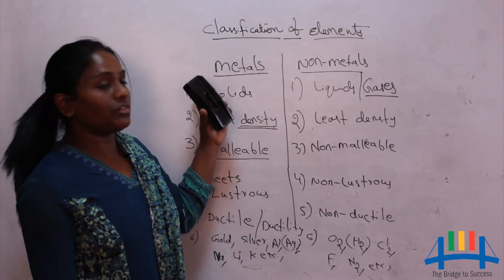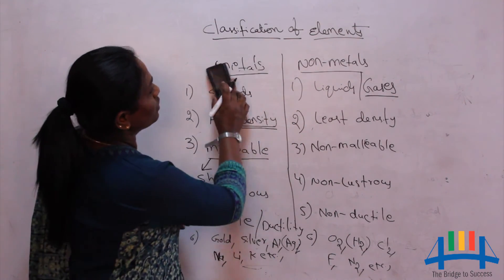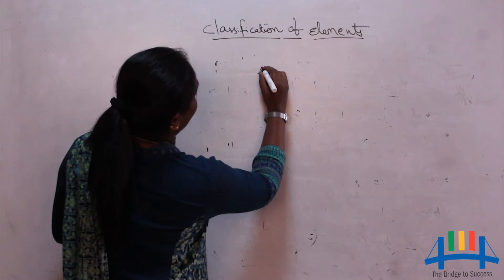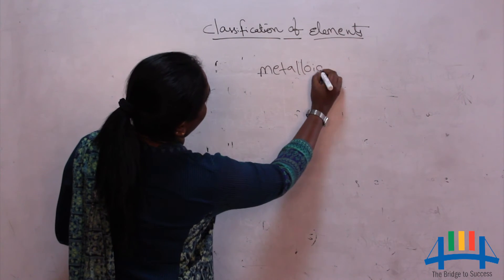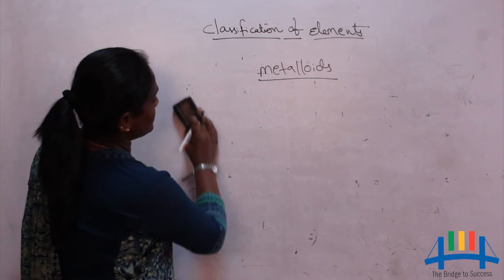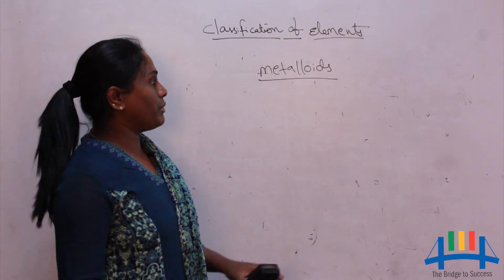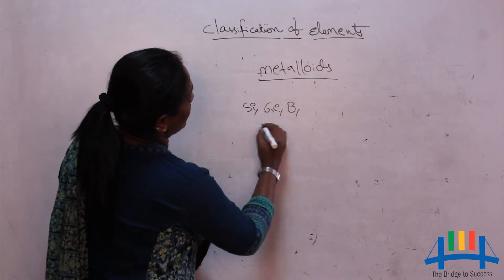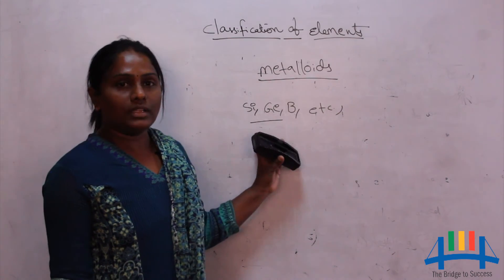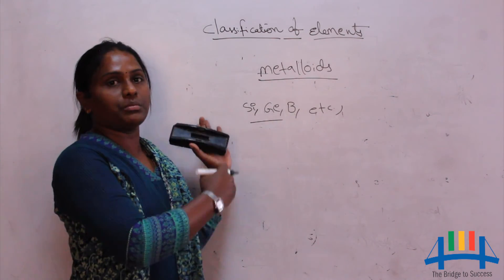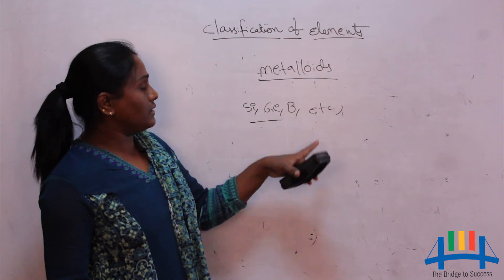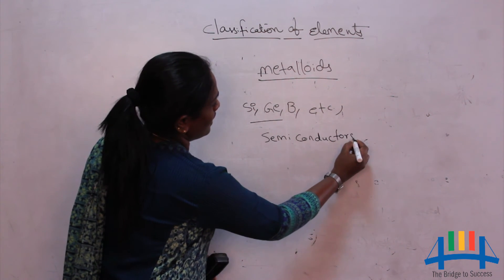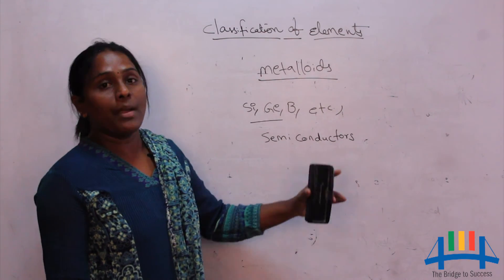Between metals and non-metals, we have one more classification — metalloids. Metalloids are elements which have the properties of both metals and non-metals. These are semiconductors of electricity, whereas metals are good conductors and non-metals are bad conductors of electricity.